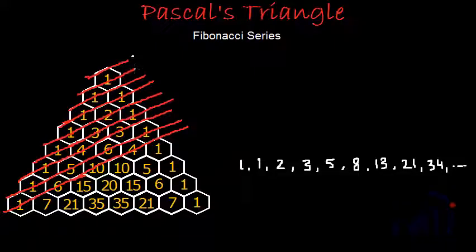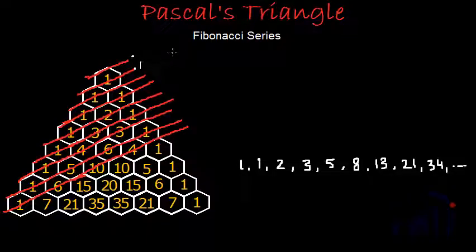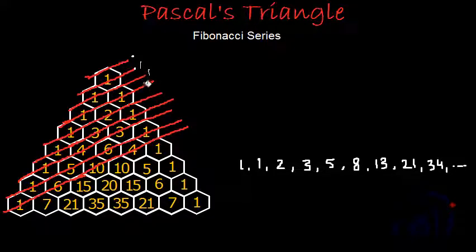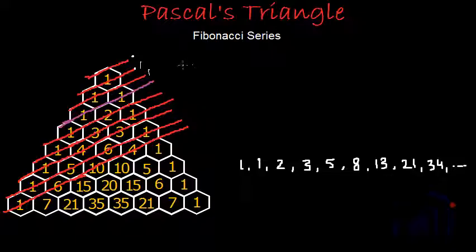If I take the first line, it is not cutting any number, so I will not take that line. But if I take the next line, it cuts the 1 at the top, and there is no other number getting slashed by that line, so 1 plus nothing gives us 1. The second line also cuts only this 1, so we get one more 1. But this next line, which I will color in purple, cuts through two 1's — 1 plus 1 gives us 2.